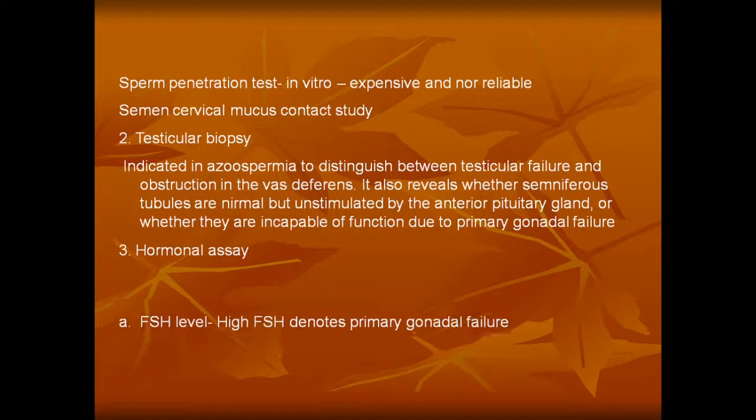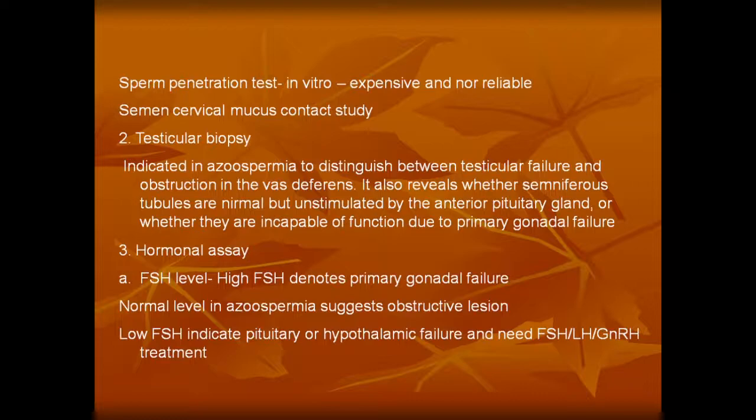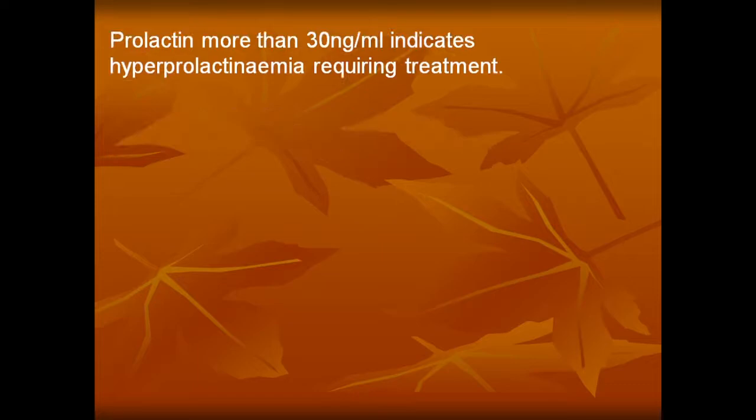Third is hormonal assays. A high FSH denotes primary gonadal failure. A normal level in azoospermia suggests obstructive lesions. Low FSH indicates pituitary or hypothalamic failure and needs FSH, LH, or GnRH treatment. Prolactin more than 13 nanogram per ml indicates hyperprolactinemia requiring treatment.